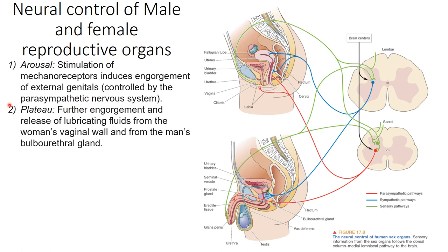The next stage in reproduction is plateau. This is when we have further engorgement and release of lubricating fluids — from the woman's vaginal wall and from the man's bulbourethral gland. The male reproductive system has all kinds of little glands, and as we've learned, glands are heavily regulated by parasympathetic and sympathetic nuclei and areas of the spinal cord. The next stage involves increasing engorgement and release of lubricating fluids.